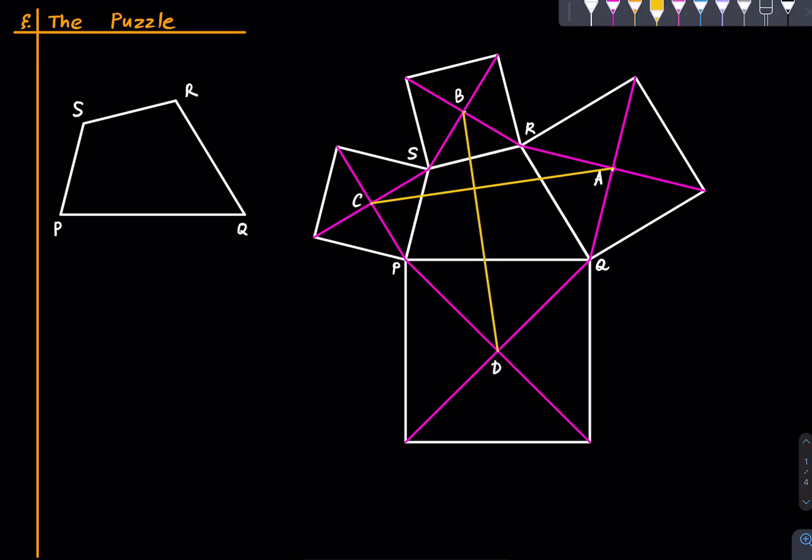So what we need to show is that A-C and B-D have equal lengths and they are perpendicular to each other. So it's a purely geometric problem and a very interesting fact.